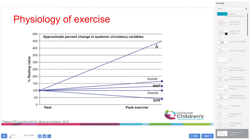This slide summarizes exercise physiology nicely. Cardiac output increases about four to five times baseline. Systolic blood pressure increases while diastolic blood pressure tends to stay stable or decrease slightly, resulting in a net increase in mean arterial pressure. Systemic vascular resistance drops the longer exercise continues.